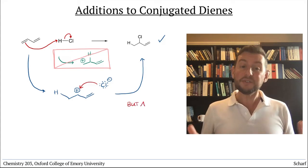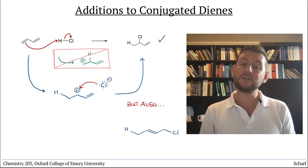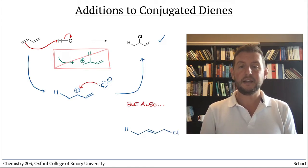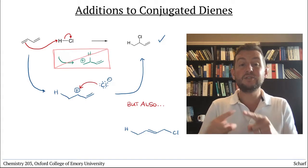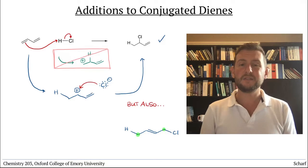But we also get one more product, 1-chloro-2-butene, in which the new H and Cl have added to opposite ends of the 4-carbon system. So what's going on here?